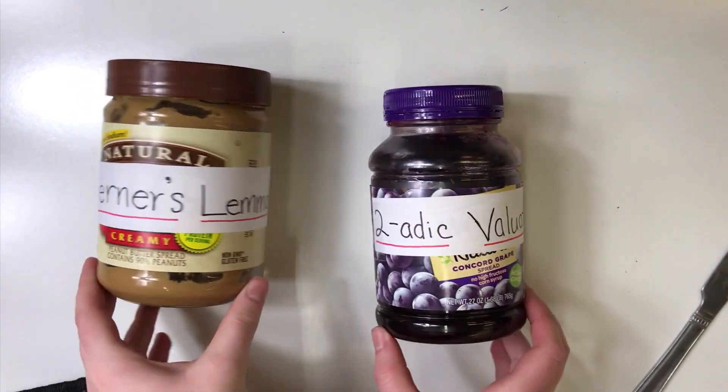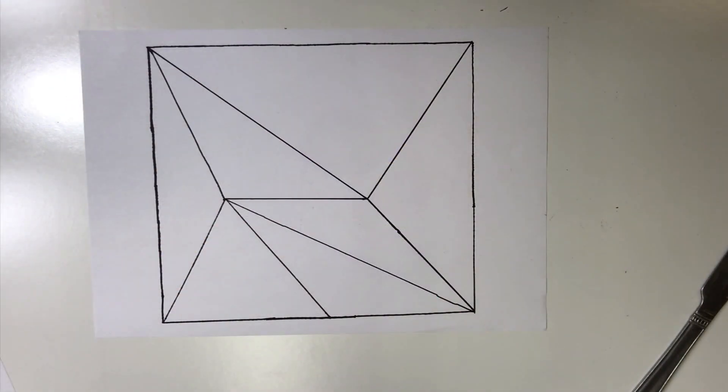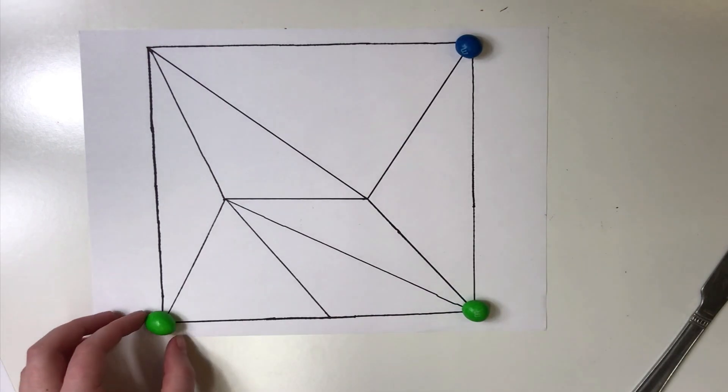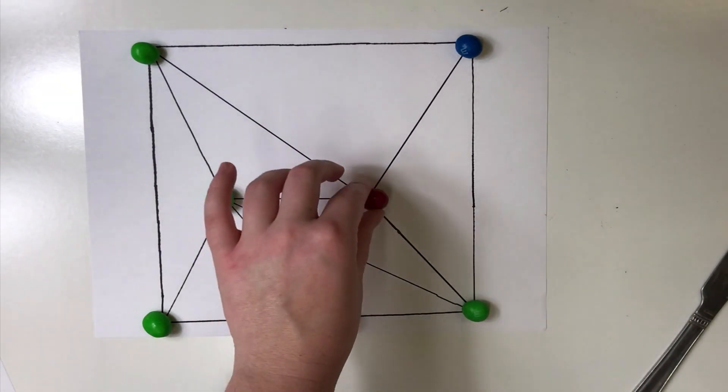First, to demonstrate Sperner's Lemma, we must triangulate the square, then color the vertices one of three different colors: red, green, or blue.